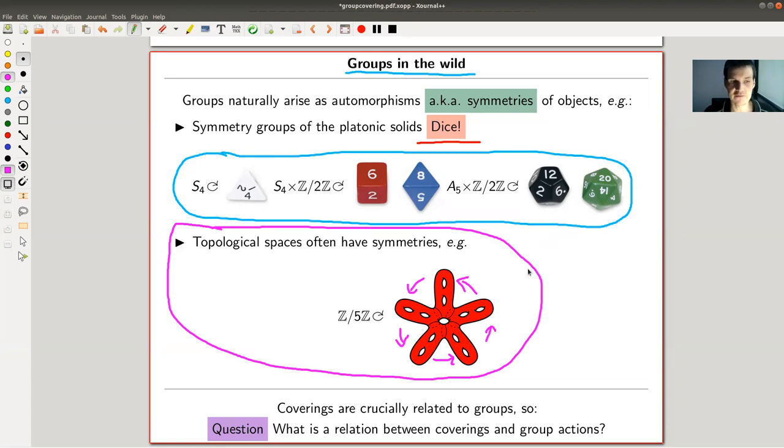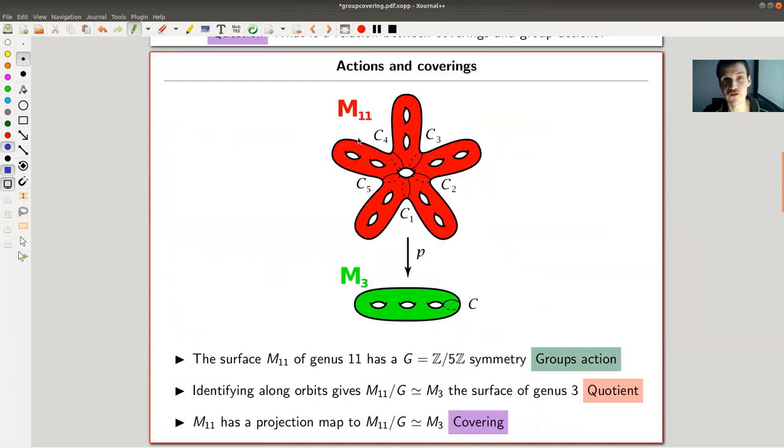Like here, you can clearly see a five-fold symmetry of the space here. We'll zoom in in a second. And those symmetries should definitely tell you something about the space, its fundamental group, something like that, right? I mean, symmetries are usually extremely important to understand the objects. So yeah, sure. Even also in the setup of topological spaces, there should be something going on with group actions. And the main observation I would like to address today is, yes, coverings are crucially related to groups.